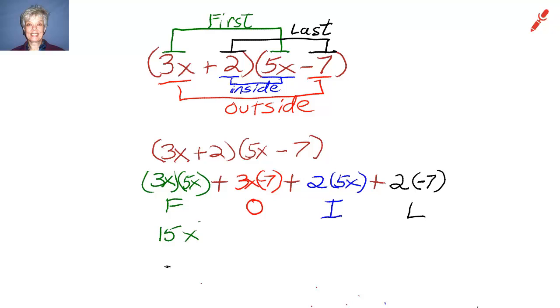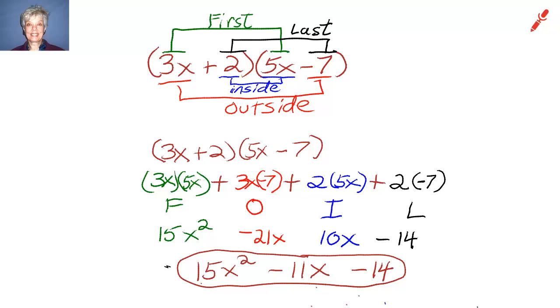That will give me 15x² plus negative 21x plus 10x plus negative 14. So I'll have 15x². Notice that the two middle terms are like terms, so I can combine them. And there we have the answer: 15x² minus 11x minus 14.